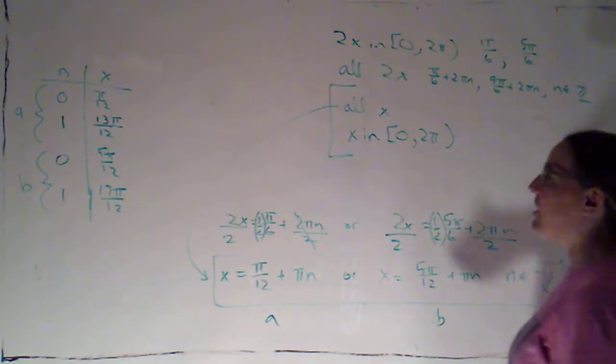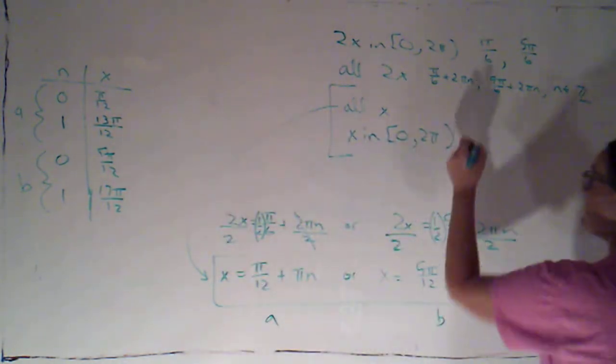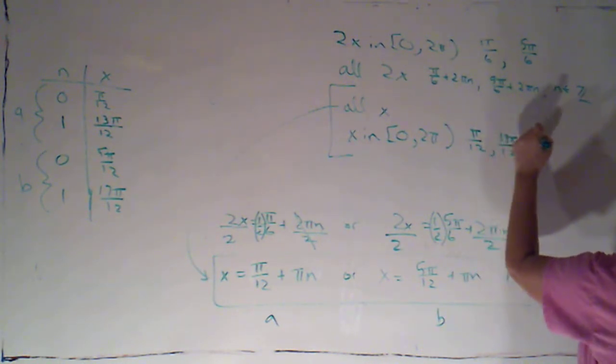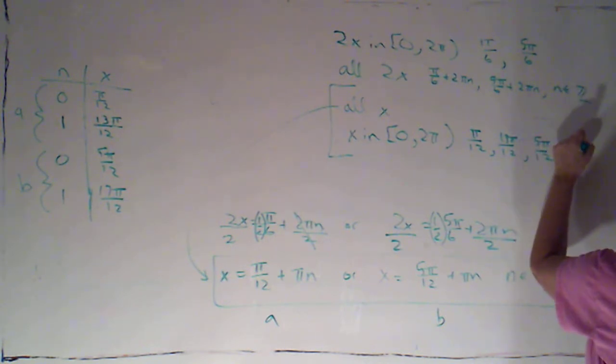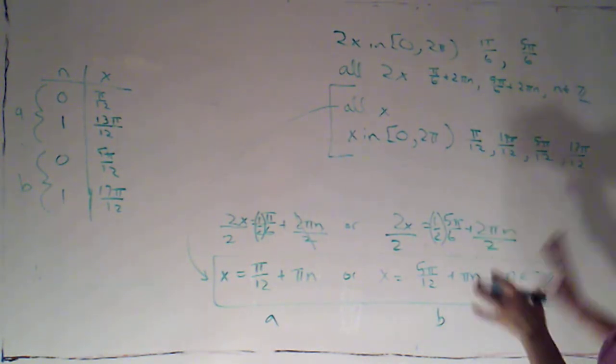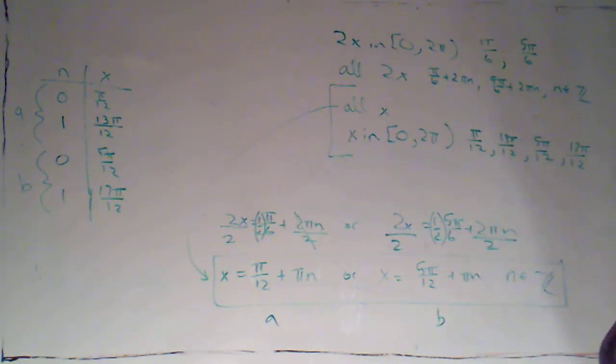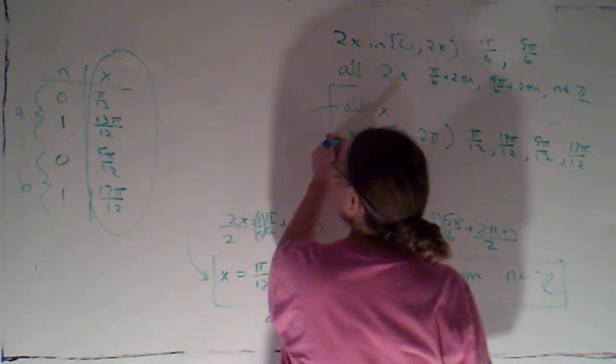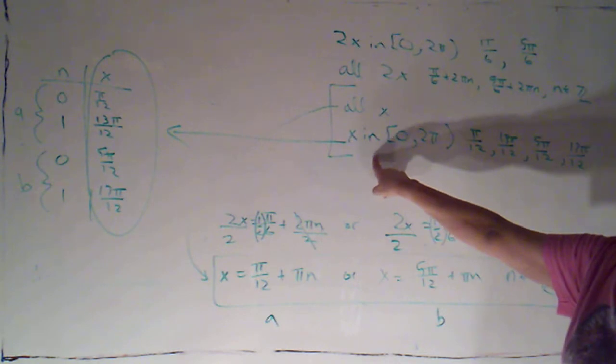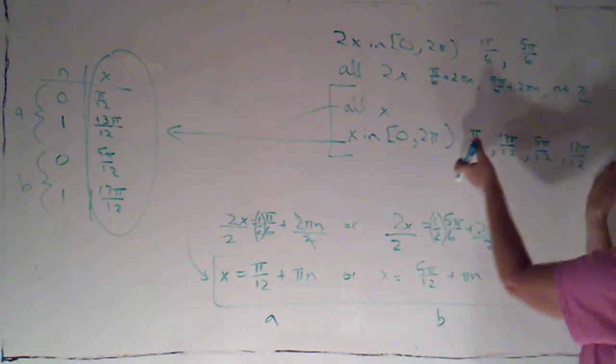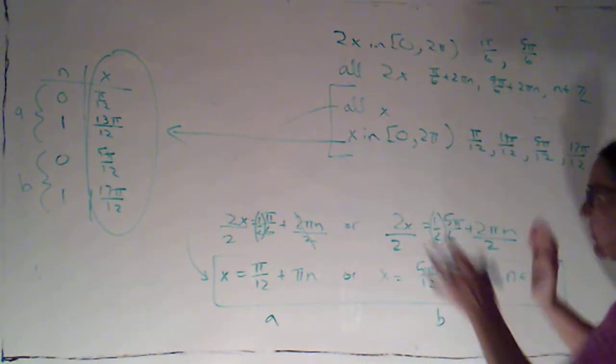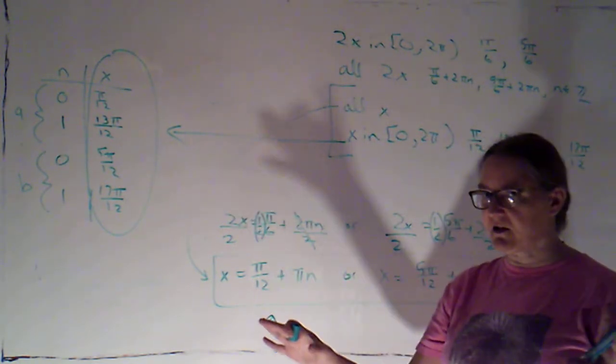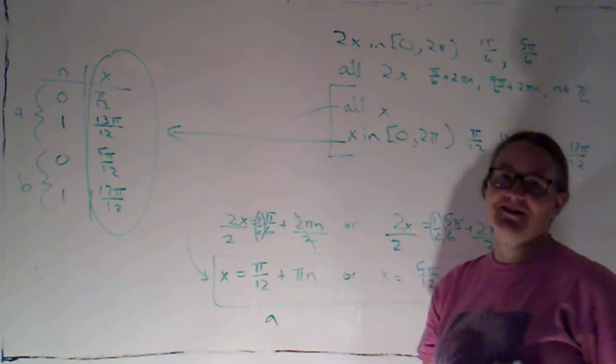Okay. So, these are my four solutions for what x could be between 0 and 2 pi. Pi over 12, 13 pi over 12, 5 pi over 12, and 17 pi over 12. And you just make sure it's clear from your work what your answers are. If I wanted to keep it in this table form, I could do something like this and say, this is my solution for the x values between 0 and 2 pi. I chose to just rewrite them over here. But there's a lot going on with these problems. So, make sure you don't just have a bunch of stuff written on the page. But it's clear what was your work and what is your final answer to the question.